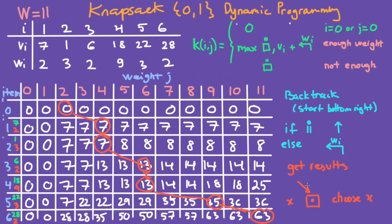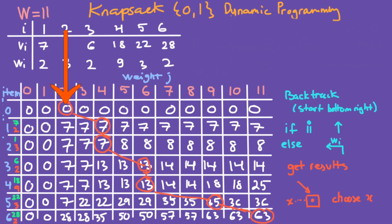To get the results from the backtracking: if the movement is diagonal, we look at that box's row and select that item entirely. We start here, move diagonally — row is item 1, so x1 = 1, meaning we select item 1. Moving downward we skip that. Moving diagonally again — row is item 3, so we selected item 3 entirely. Then we move diagonally to item 5 — item 5 is selected. Then item 6 — item 6 is selected.